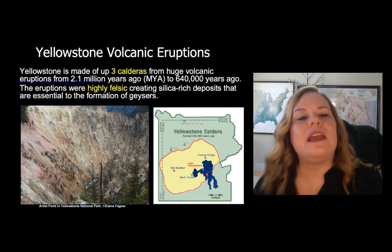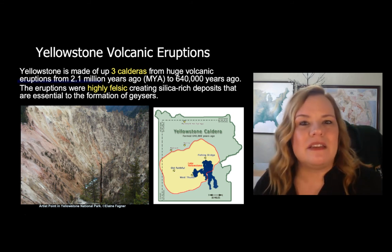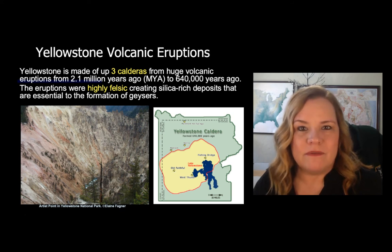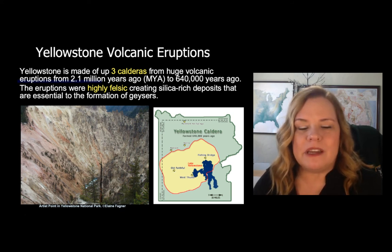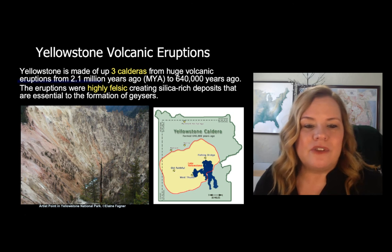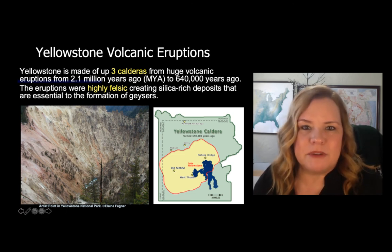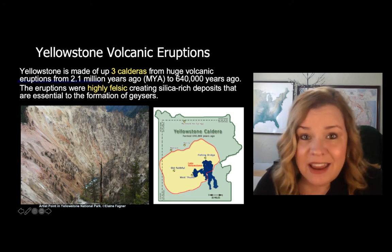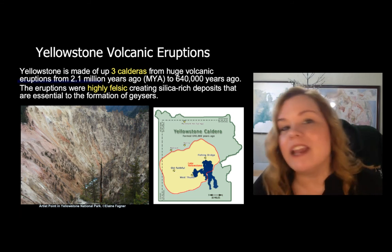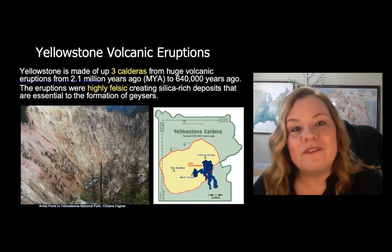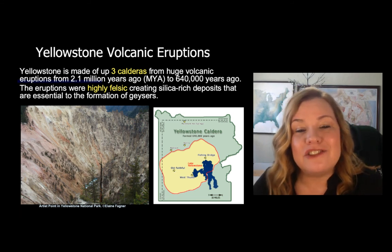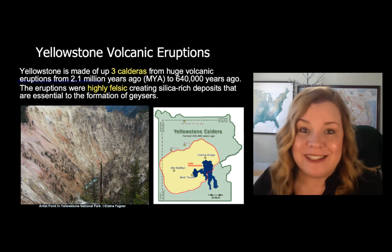When Yellowstone erupted 640,000 years ago, the rhyolite, volcanic ash, and volcanic tuff laid down are the perfect stuff to make geyserite out of — which is why we have so many geysers in Yellowstone. The largest eruption occurred 2.1 million years ago — the Huckleberry Ridge — which created ash deposits that came all the way down to the Waco, Texas area. It was huge.